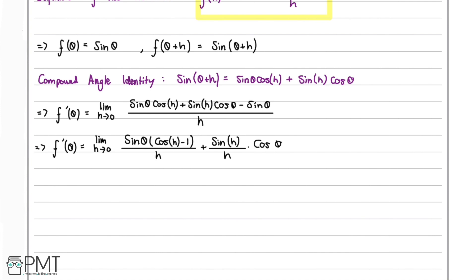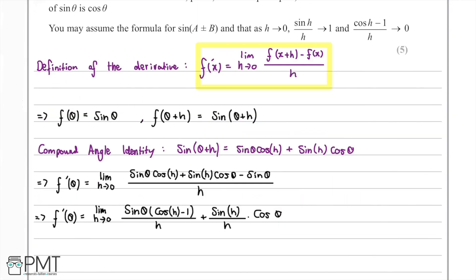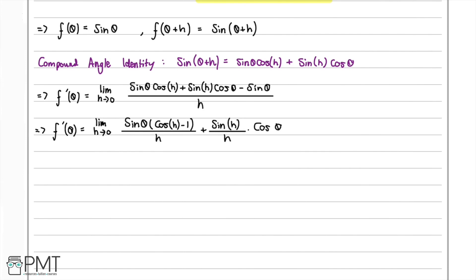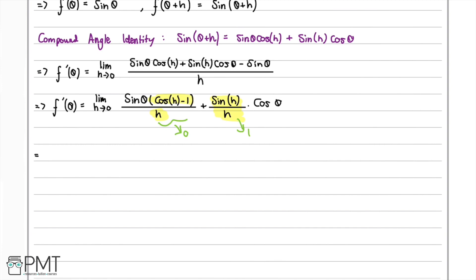Looking back at the given information: as h tends to zero, sine h over h tends to 1, and as h tends to zero, (cos h − 1) divided by h tends to zero. Applying these limits, we have sine θ multiplied by 0, plus 1 multiplied by cos θ.